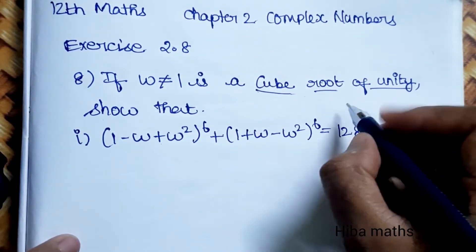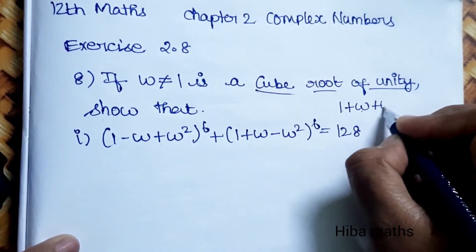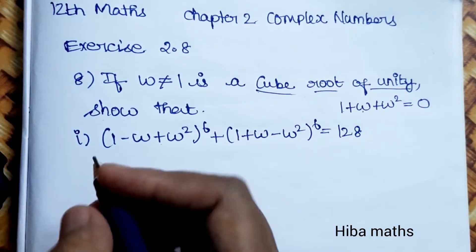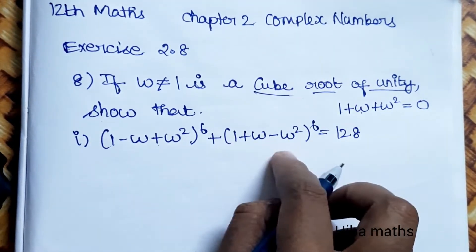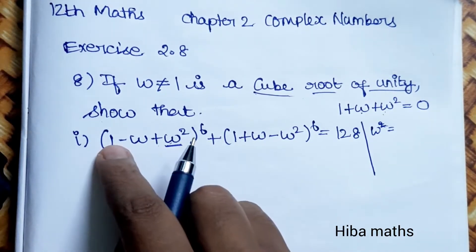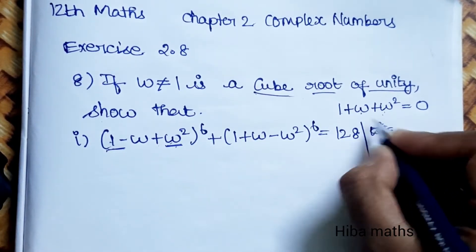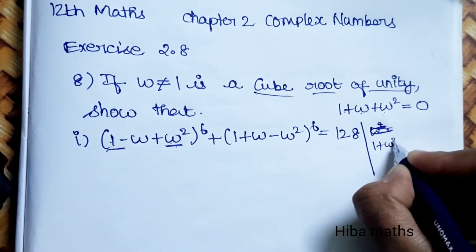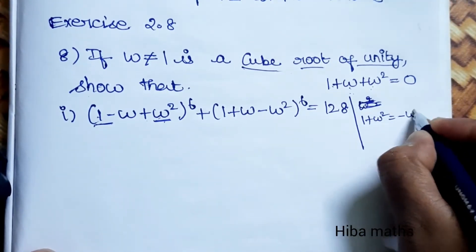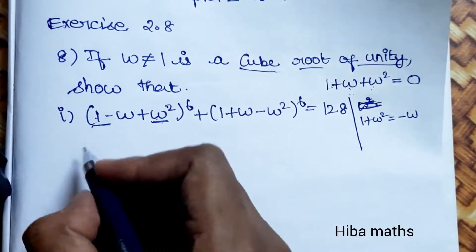For cube roots of unity, we already know the identity: 1 + ω + ω² = 0. From this, 1 + ω² = -ω, and similarly 1 + ω = -ω². These substitutions will be our first step in solving this.